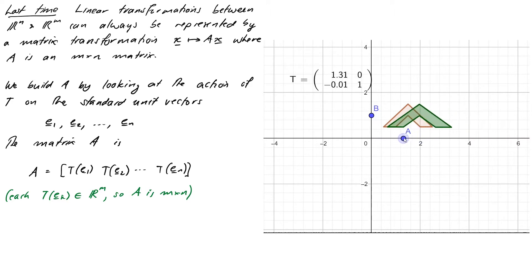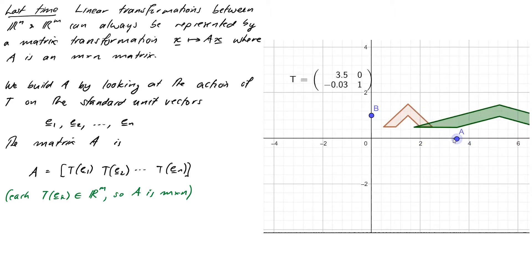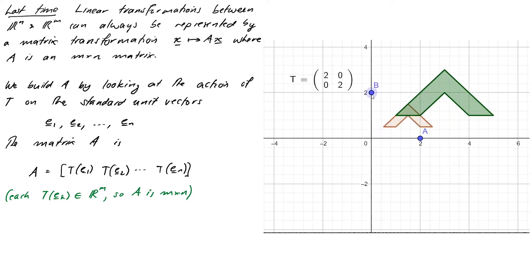When I drag this one it scales the picture in the horizontal direction, and if I do the same for my second vector it scales in the vertical direction. So what I've produced here is the matrix (2,0;0,2) — the scaling transformation we talked about last time — and you can see it blows up my picture by scaling each dimension by 2.